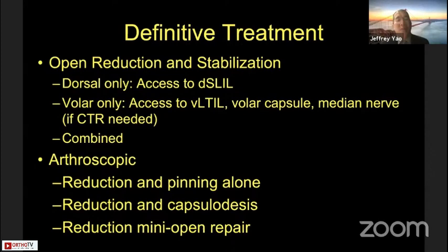For open reduction and stabilization, a dorsal-only approach allows access to the dorsal scapholunate ligament, which is the most important and strongest part of the ligament. A volar-only approach gives access to the volar LT ligament — the strongest volar portion — and we can decompress the median nerve if needed. Alternatively, a combined dorsal and volar approach can be used.